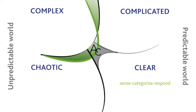The downside of placing an issue in the clear domain is that it takes a lot of energy, time and resources to both move and keep an issue in this domain. You have to devise operating procedures, train people and put in place monitoring and auditing systems. So you only want to move an issue into the clear domain if that cost can be justified, say for safety critical or essential regulatory reasons. The key difference between clear and complicated is the time and space between cause and effect. Clear is known and familiar; complicated is unfamiliar yet knowable.